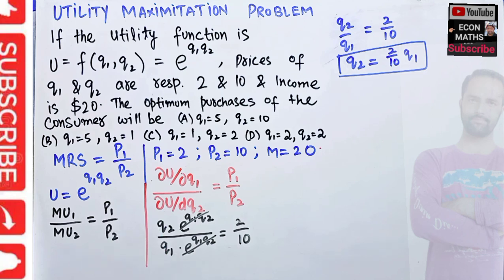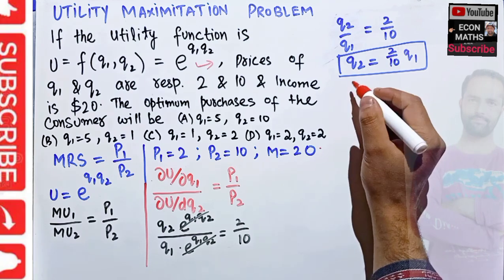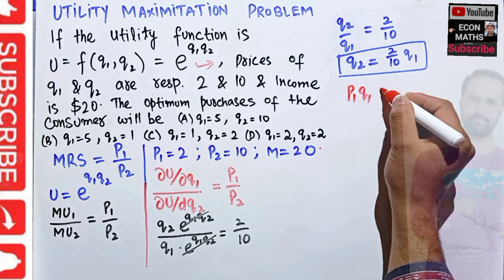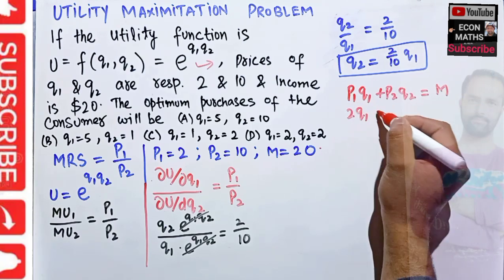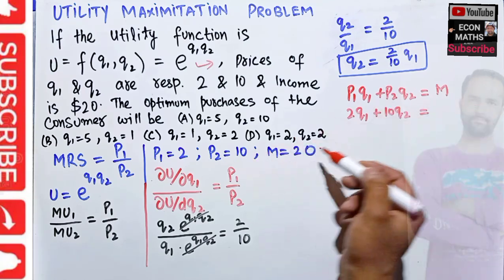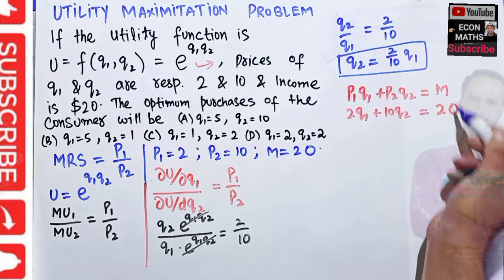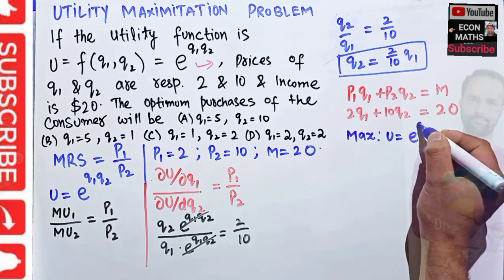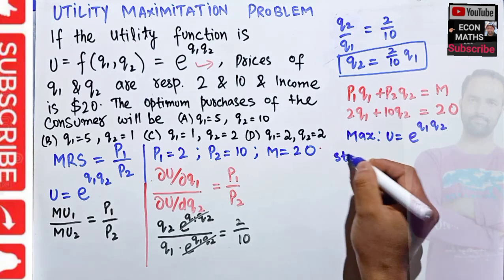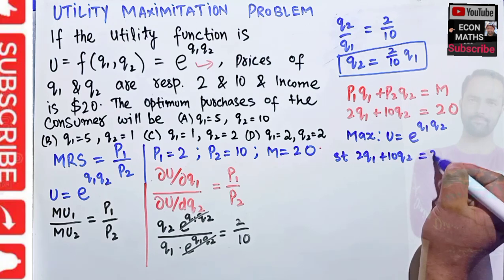We also need the budget constraint. We want to maximize u = e^(q1 * q2) subject to the budget constraint: p1*q1 + p2*q2 = income, that is 2*q1 + 10*q2 = 20. This is the constrained optimization problem.